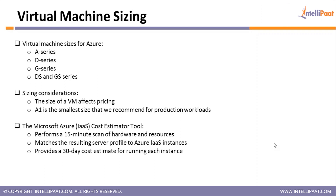The DS and GS series are designed for premium storage in Azure. Every VM has different pricing, so choose the VM based on pricing and the configuration required for your application. The A1 is the smallest size offered for production workloads. You can also use a cost estimator tool to find out what different machines will cost.